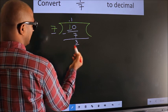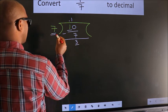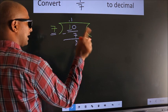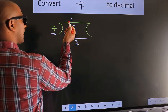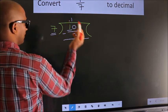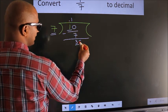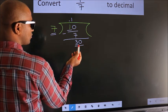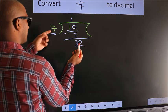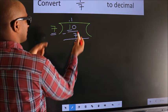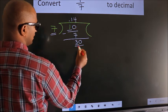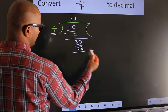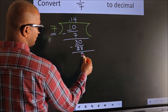Here we have 3, here 7. 3 is smaller than 7. And we already have the decimal, so we can directly take 0. So, 30. A number close to 30 in the 7 table is 7 fours, 28. Now, we subtract. We get 2.